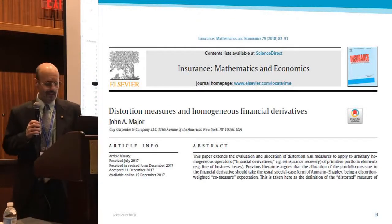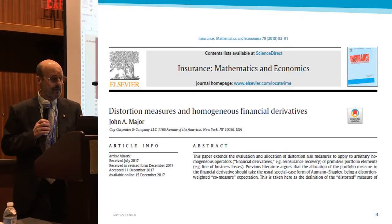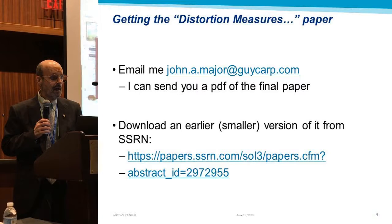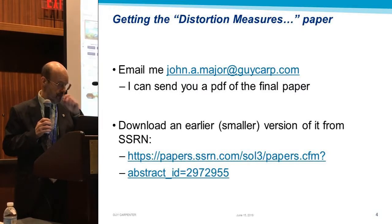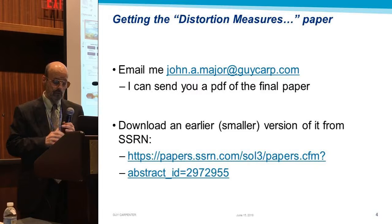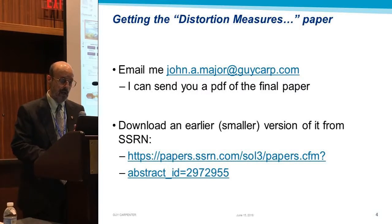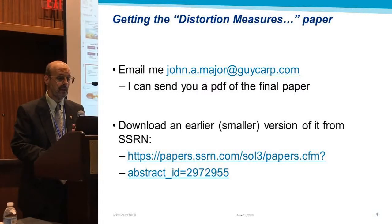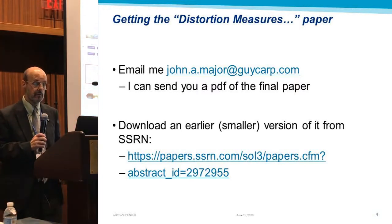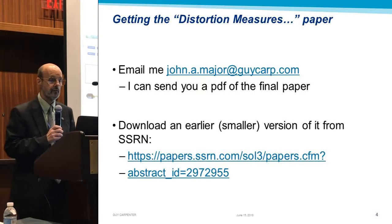Can we get a reprint of your IME article in a freely available CAS journal? Because with IME, don't you have to pay? We can try to add that. I can email it to you if you ask me, and if you go to SSRN, there's a version of it there that's freely available.